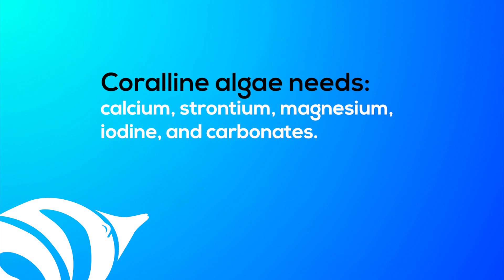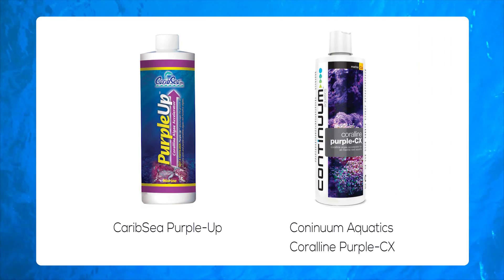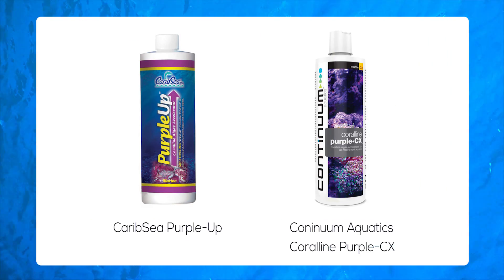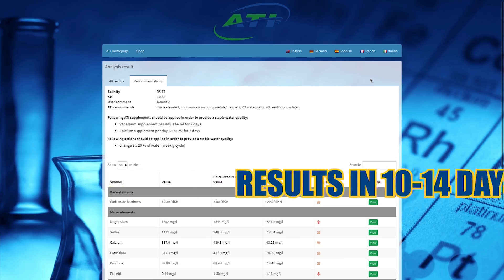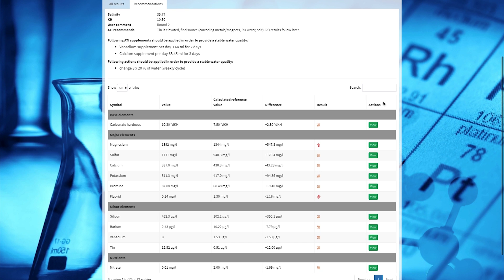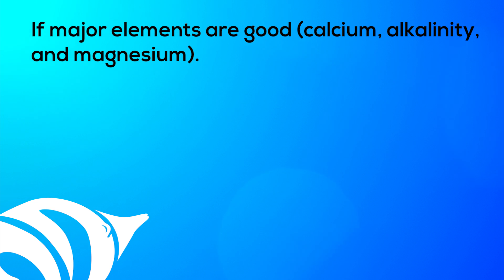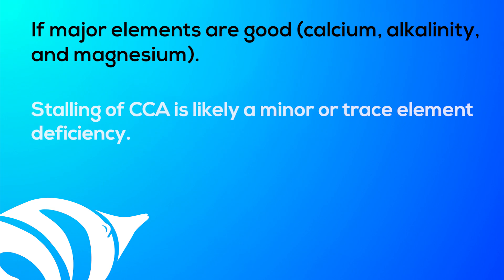There are additives that will help coralline algae thrive, but before you add anything make sure your aquarium has adequate lighting, calcium, alkalinity, and water movement. Coralline algae uses calcium, strontium, magnesium, iodine, and carbonates to build its limestone structure. Products like CaribSea Purple Up, Continuum Aquatics Coral and Purple CX, and others provide a mixture of these essential elements formulated to stimulate CCA growth, with the added benefit of stimulating coral growth as well. Be sure to test your tank parameters to ensure you're not overdosing any of these elements, especially if you already have a regular dosing regimen. If you notice your coralline algae growth slows or stalls, it's likely a minor or trace element deficiency.